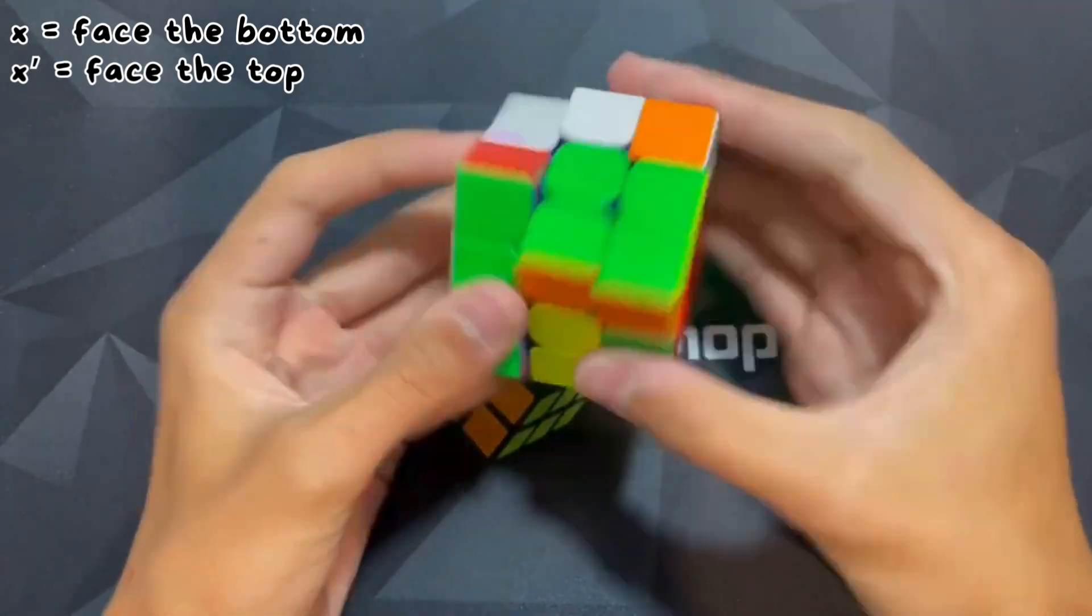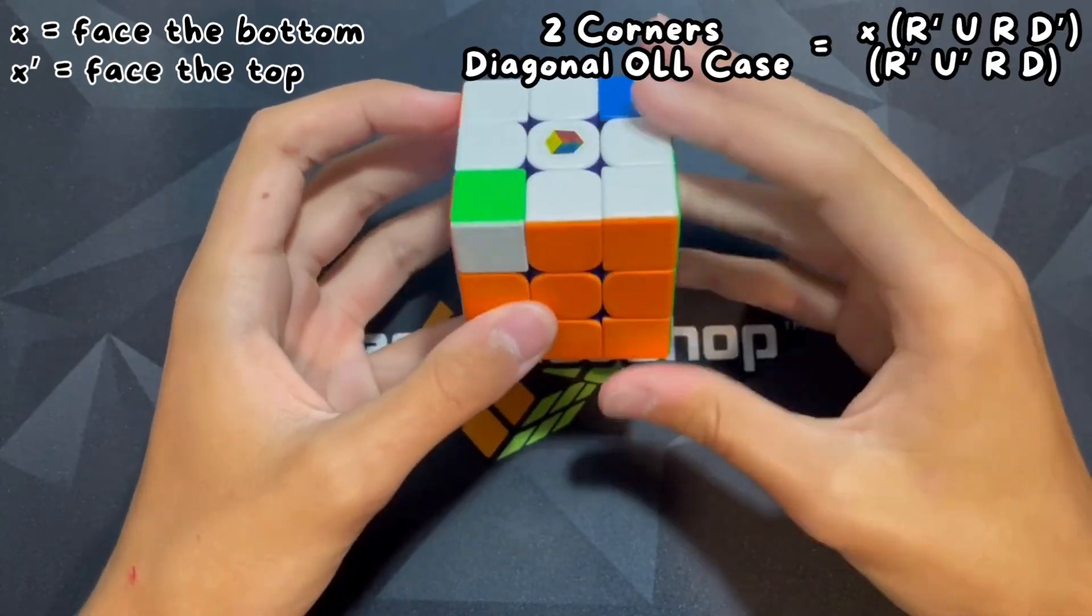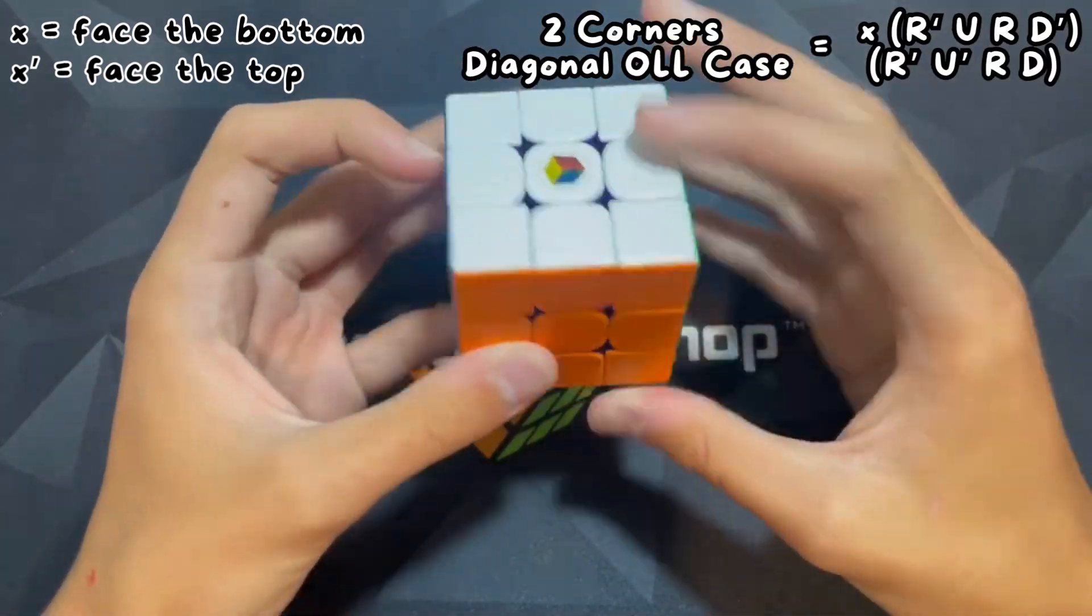There's this OLL case right here in beginner's CFOP where you just go like this, face the bottom, and do your algorithm just like that.